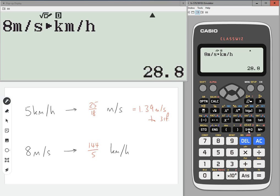If I press the SD button, so that's 28.8 kilometers per hour. So that's how we can use the conversion button there.